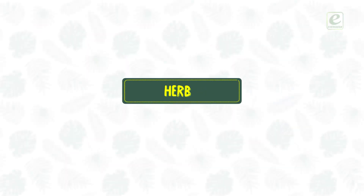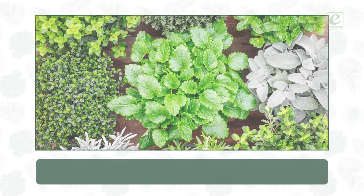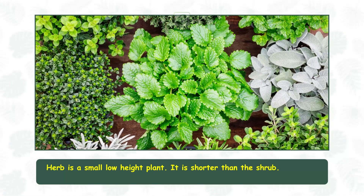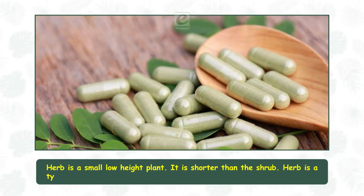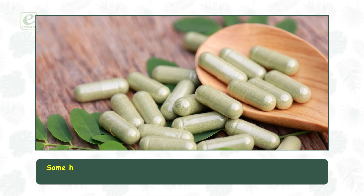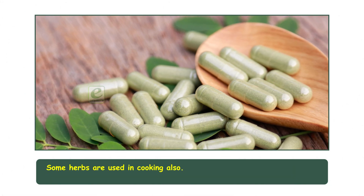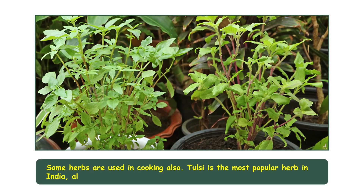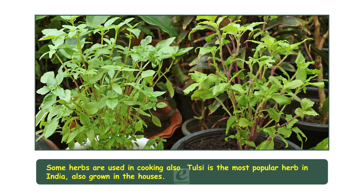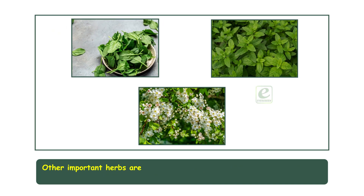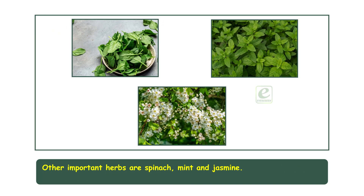Herb. Herb is a small, low-height plant. It is shorter than the shrub. Herb is a type of plant that is used as medicine. Some herbs are used in cooking also. Dulce is the most popular herb in India and is also grown in houses. Other important herbs are spinach, mint, and jasmine. A herb lives for about 5 years.